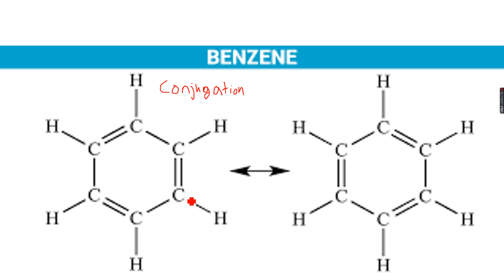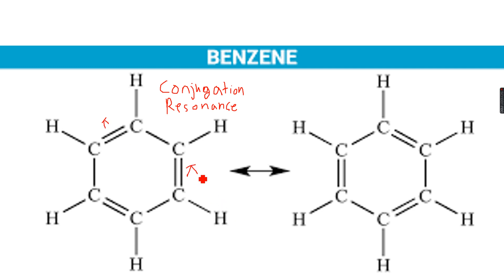Due to this conjugation, we have something called resonance structures. So these are two resonance structures of benzene, and these resonance structures are because of these pi bonds. You can see that there is a pi bond here, here, and here, and these pi bonds have shifted their positions — now we have a pi bond here, here, and here.